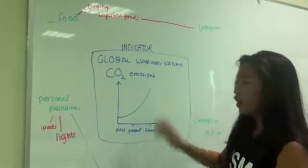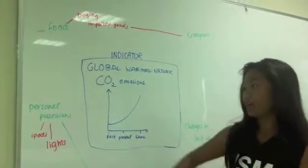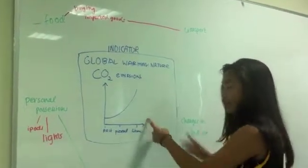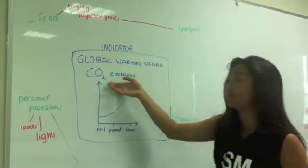A systems graph is basically you're listing down all the factors that are influenced and being influenced by your behavior graph or the indicator, which is for this one, global warming, and the compass group is nature and CO2 emissions.